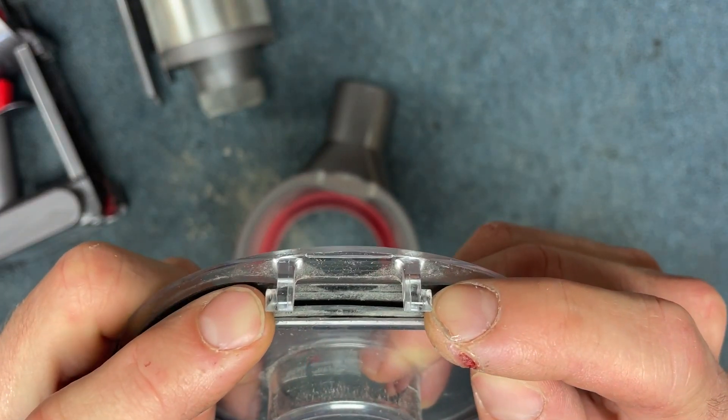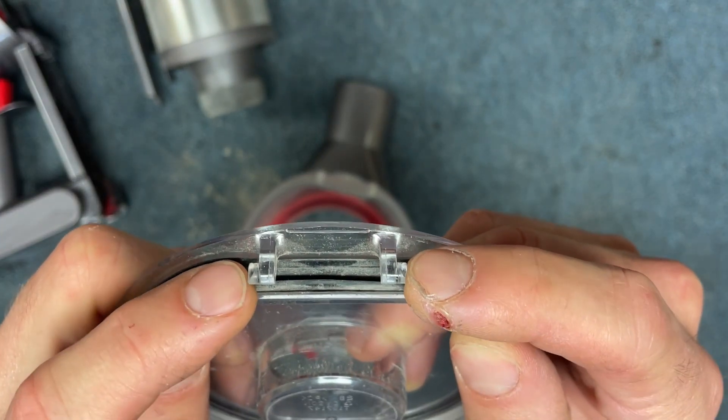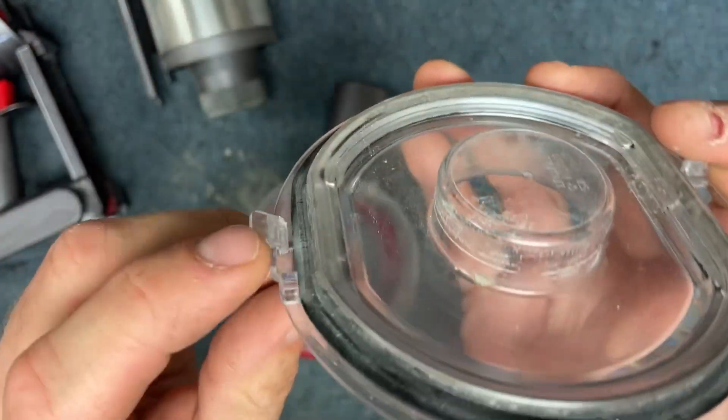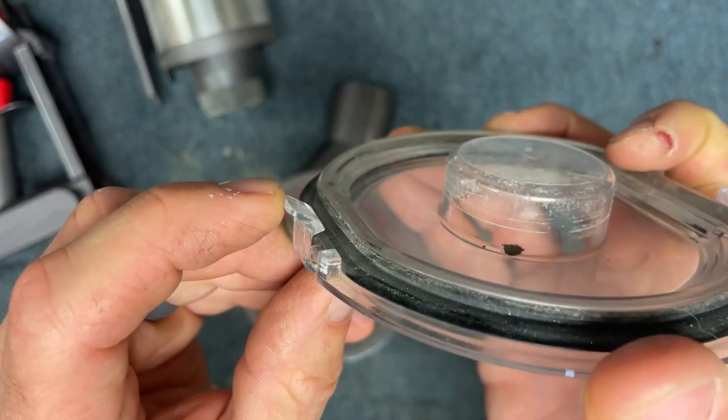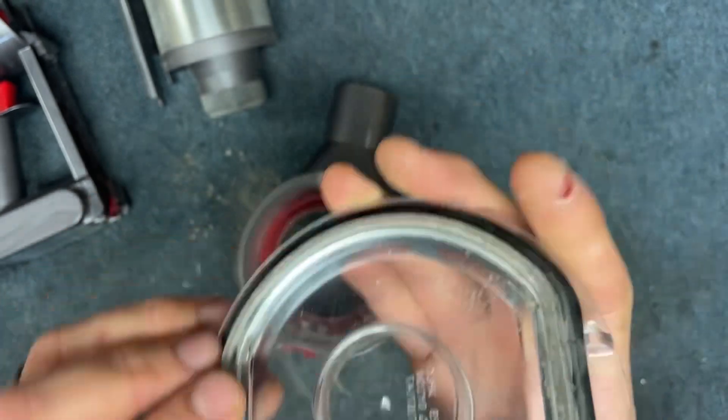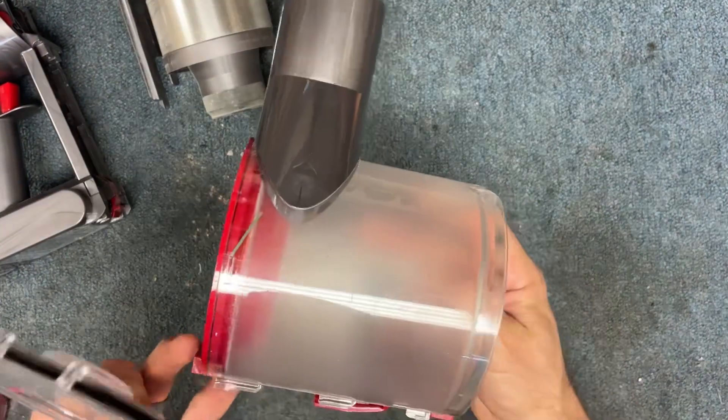And as long as this piece did not break, you are okay to just pop it back on. You don't need to replace this whole bin.